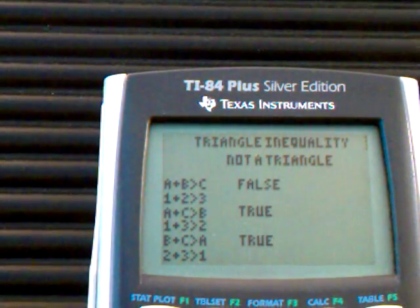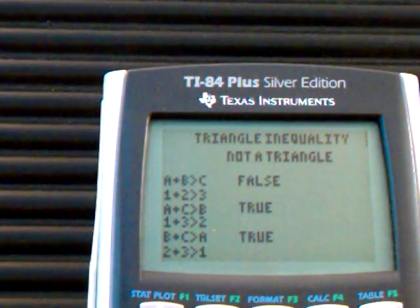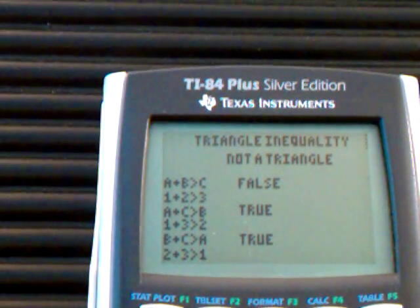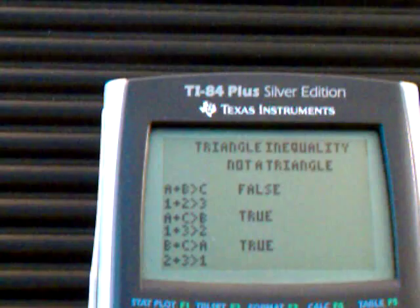And it tells you that this is not a triangle based on where it fails. Because triangle inequality states that given any two sides, it must be greater than the third. So in the first case, one plus two is not greater than three, so it gives me a fault, so it doesn't work.